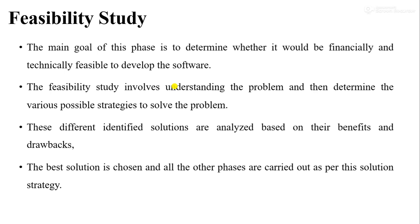The first phase of the classical waterfall model is the feasibility study. The main aim of feasibility study is to determine whether the product is financially and technically feasible to develop. If it is feasible, then we need to formulate different solutions to solve the particular problem, and among those different solutions, we identify the best solution based on its benefits and drawbacks. After selecting the best solution, we carry out all other activities using that solution.